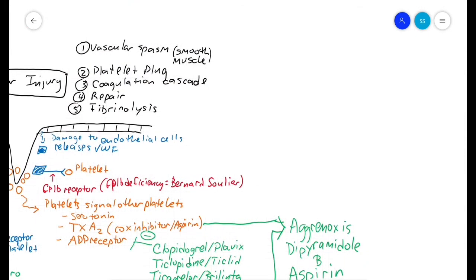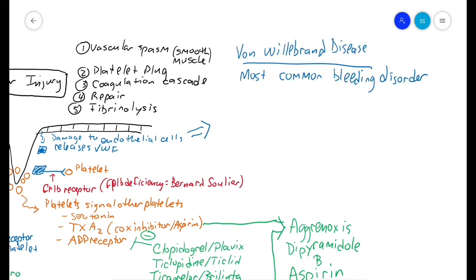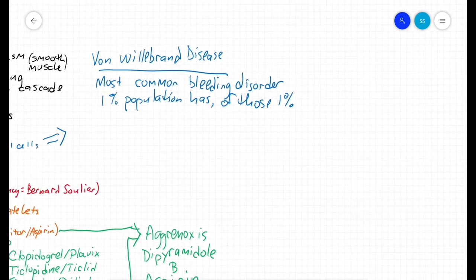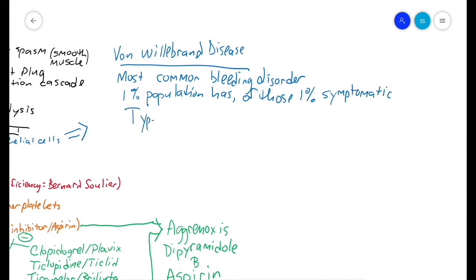Let's talk about von Willebrand disease. Von Willebrand disease is the most common bleeding disorder - about 1% of the population has it, and of those who have it, only about 1% are actually symptomatic. There are three types. Type 1 is a low level of von Willebrand factor and can be treated with desmopressin (DDAVP).